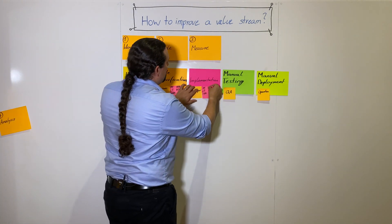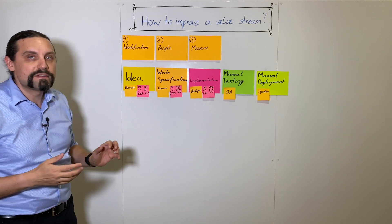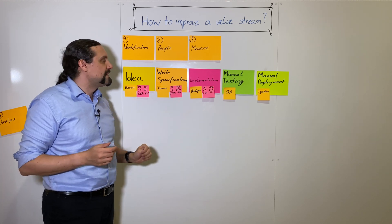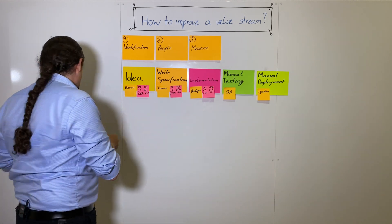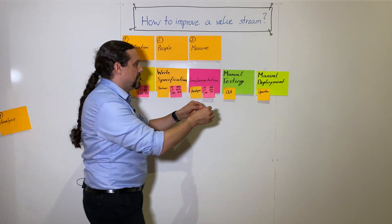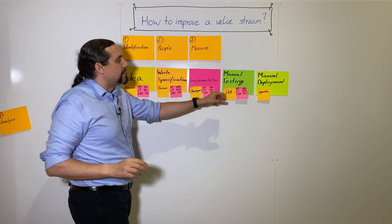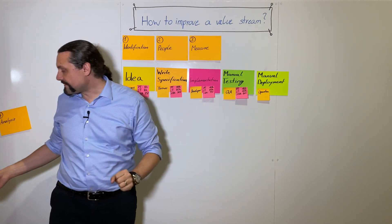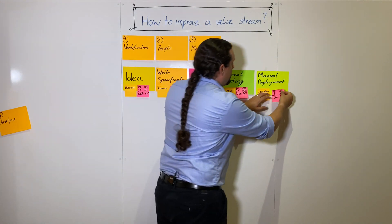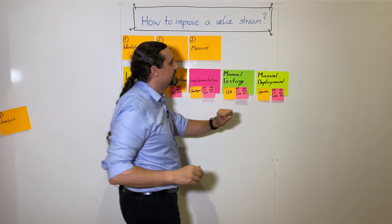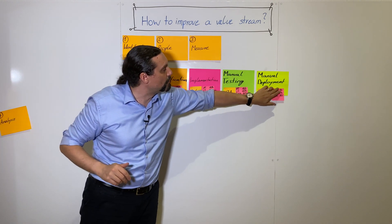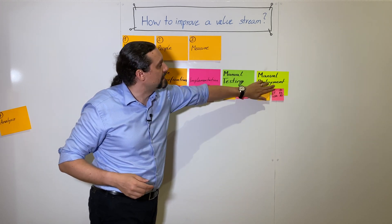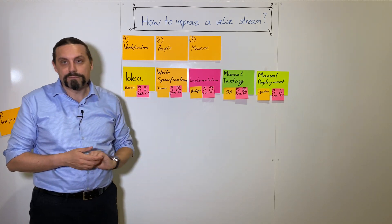In the implementation we have measured a process time of 40 hours, lead time of 80 hours, and percentage complete and accuracy of 75 percent. In manual testing we have a process time of 16 hours, lead time of 40 hours, and percentage accuracy of 50 percent. And last but not least, manual deployment: process time of one hour, lead time of eight hours, and percentage accuracy of 80 percent.